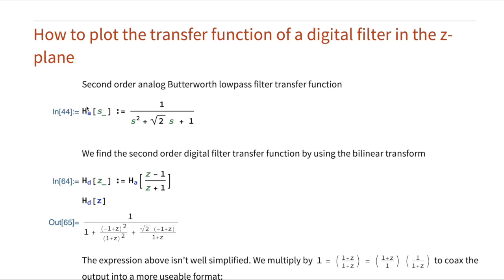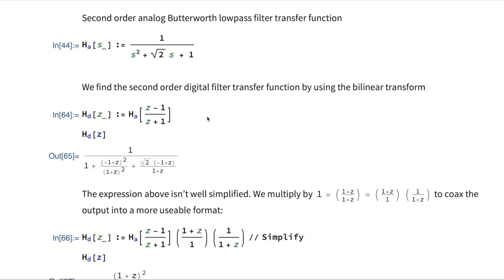I'm starting out with the analog filter which I'm defining as h_a, the transfer function. I've looked this up online, this is the analog transfer function, and I'm getting the digital filter by defining a new function h_d.